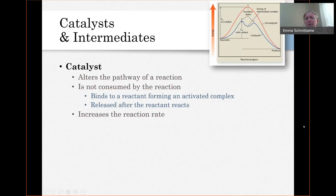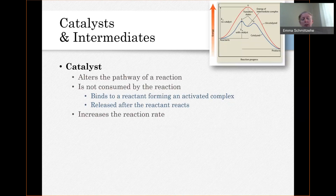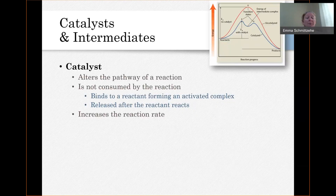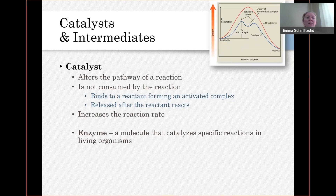Figuring out what's a catalyst for something is really a trial-and-error kind of thing, so it's pretty tricky to know what would be a catalyst. But there are lots of reactions that really only work at a feasible rate with a catalyst. Specifically, reactions that occur in our body or any biological organism rely on catalysts, and the organism naturally produces those catalysts because it needs them. Those we would usually call enzymes — an enzyme is a catalyst that catalyzes a specific reaction for a living organism.